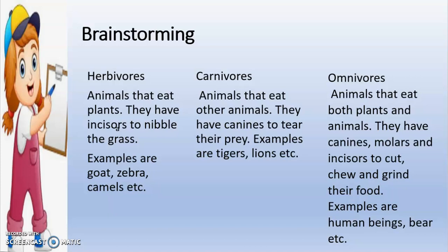Carnivores are animals that eat other animals. They have canines to tear their prey. Examples are tigers, lion, etc.